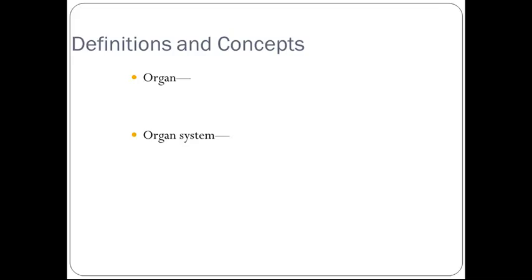An organ is defined as a structure made up of two or more kinds of tissue that can together perform a more complex function than a single tissue. An organ system is a group of organs that perform a more complex function than any organ alone.